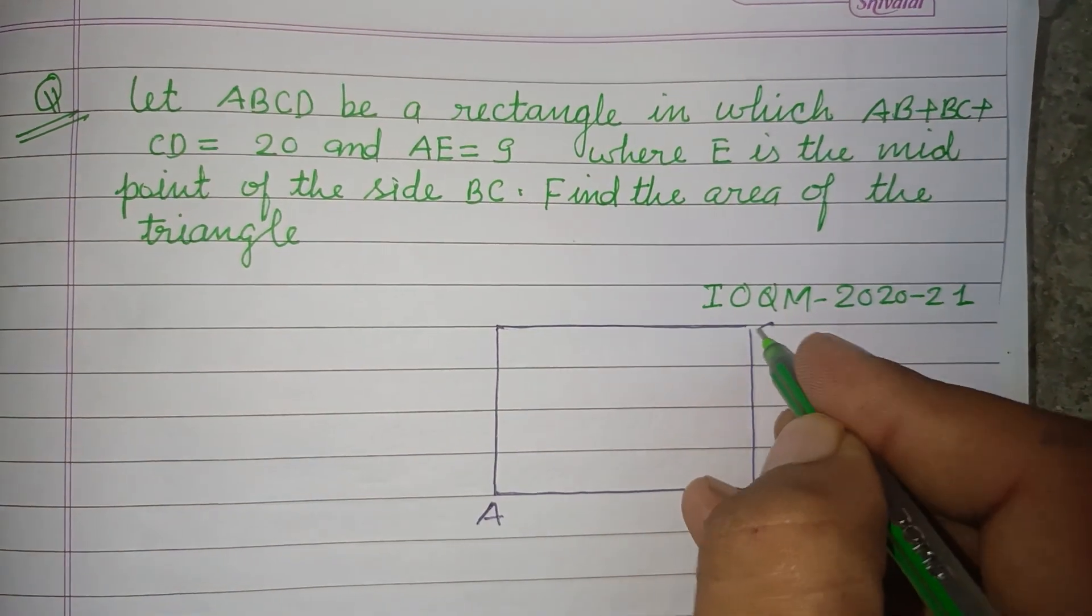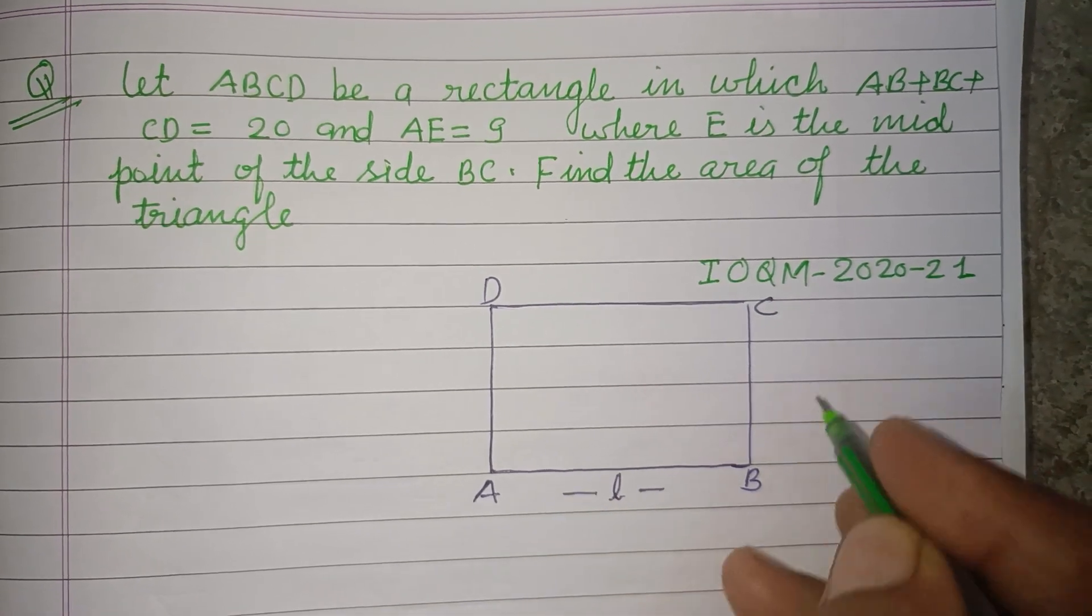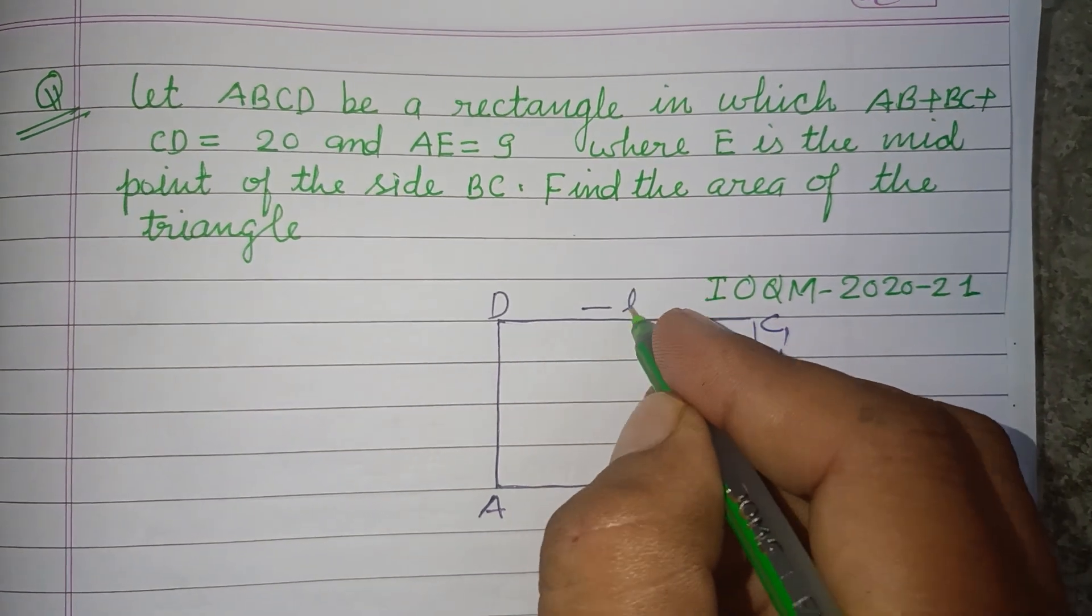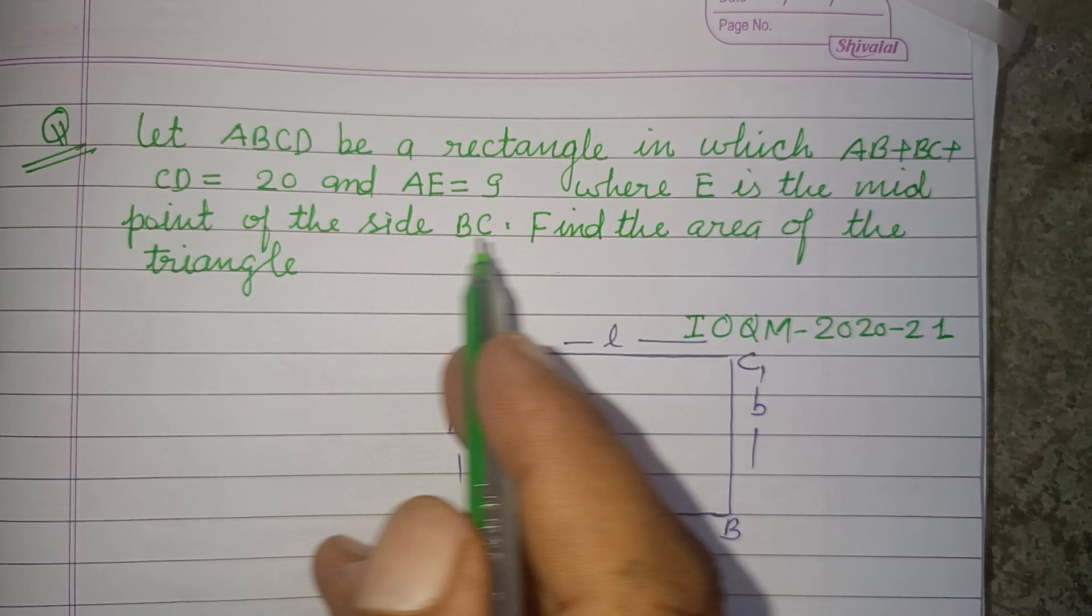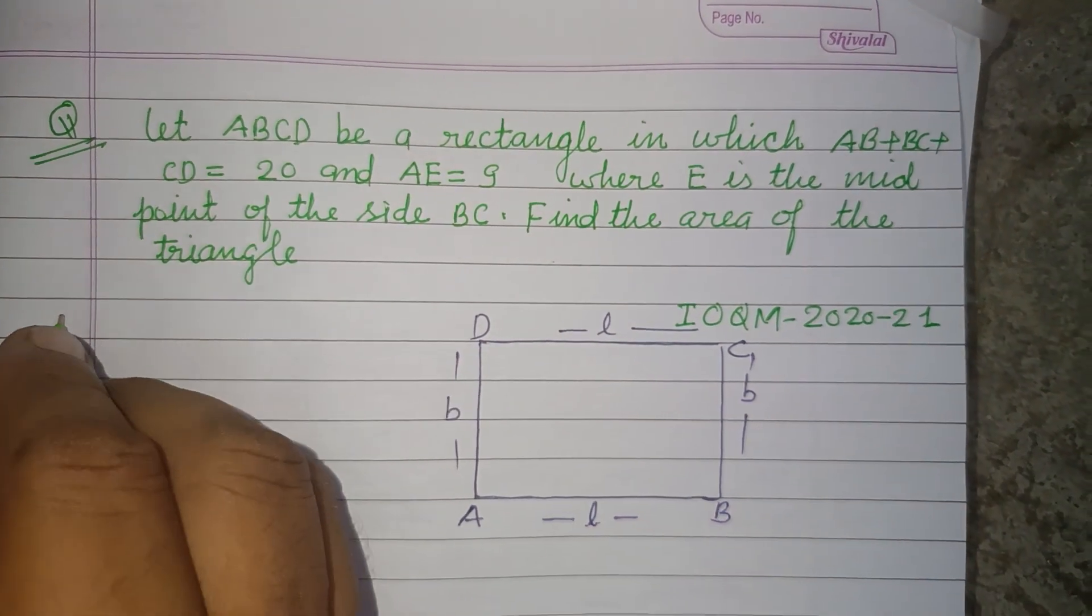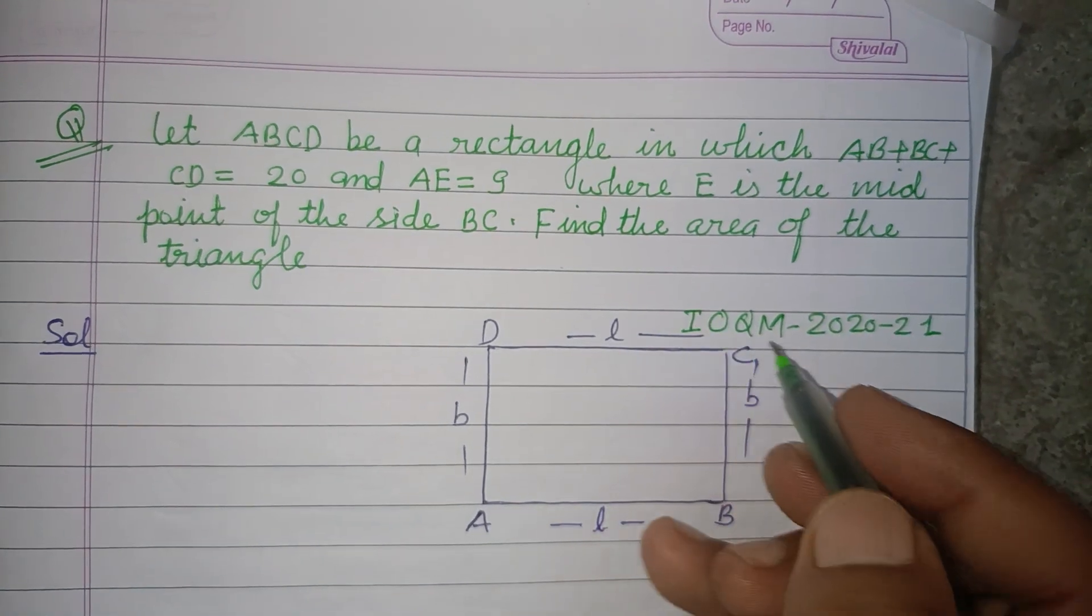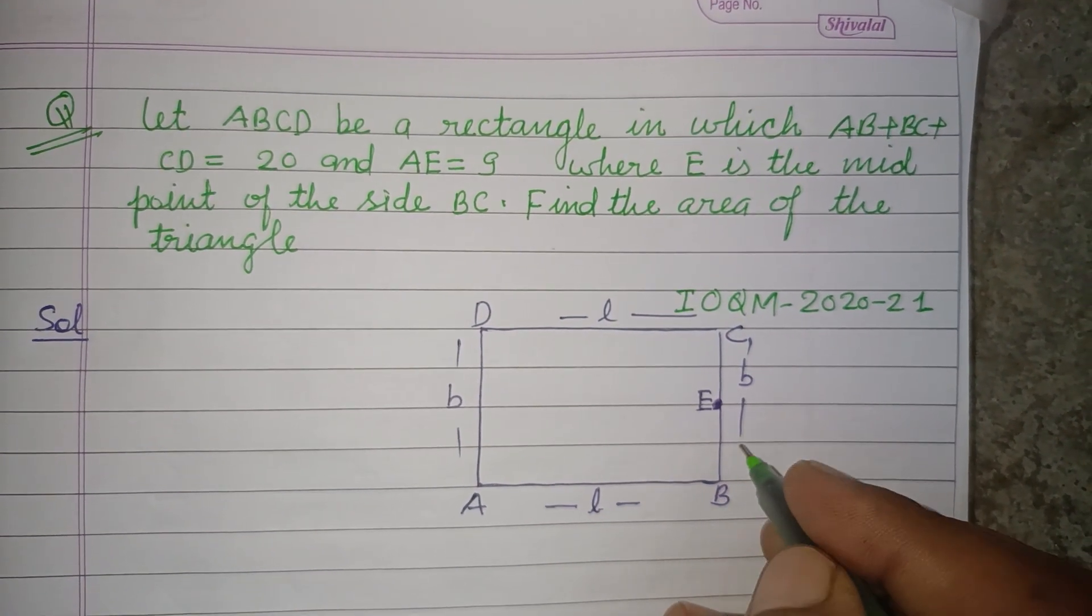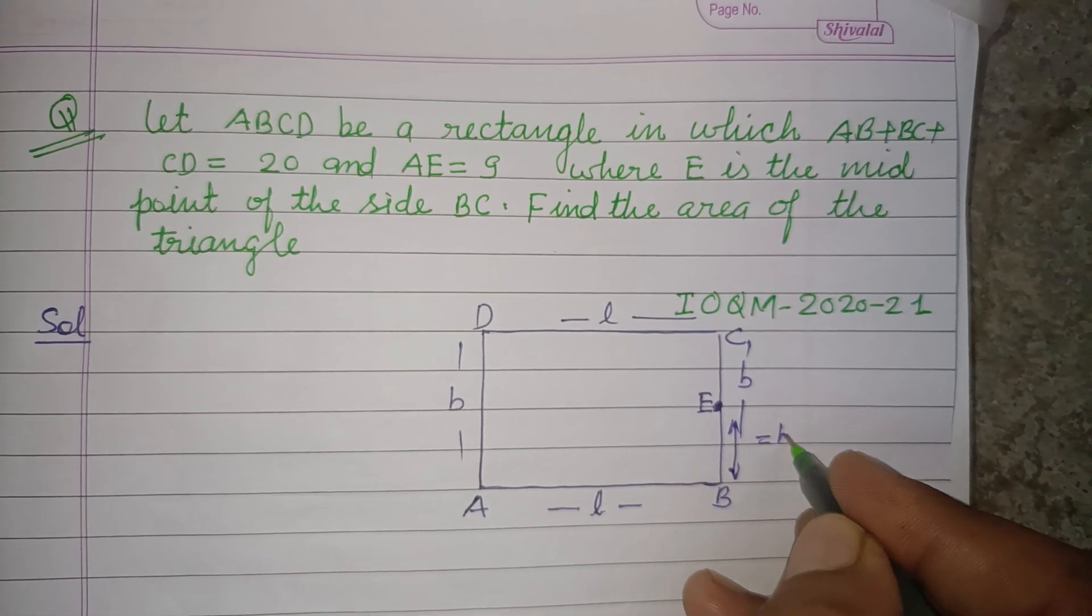ABCD whose length is l and breadth is b. This is length and this is breadth. E is the midpoint of the side BC, so this is E which is the midpoint of BC. Therefore EB is b/2.